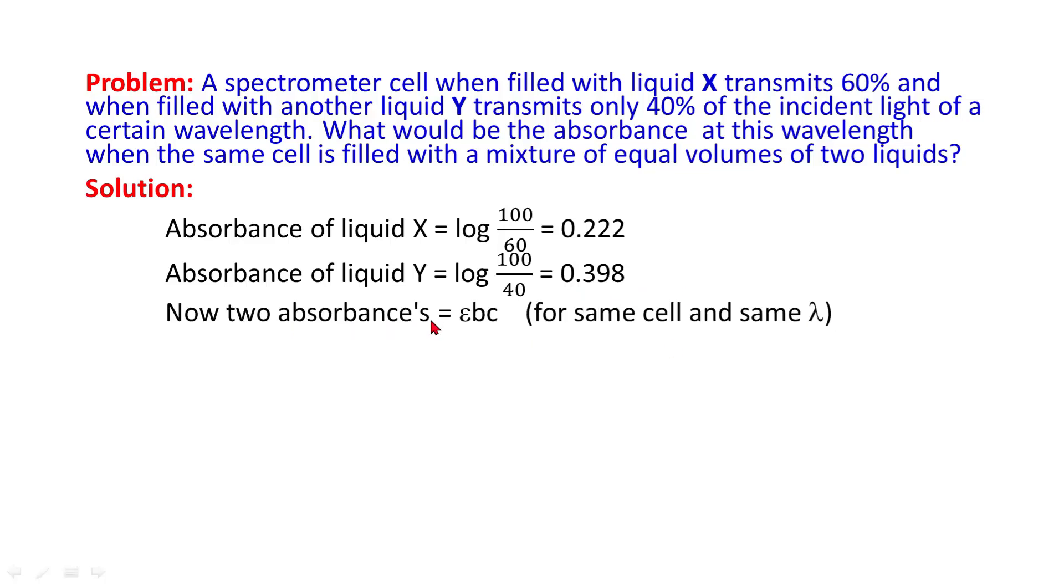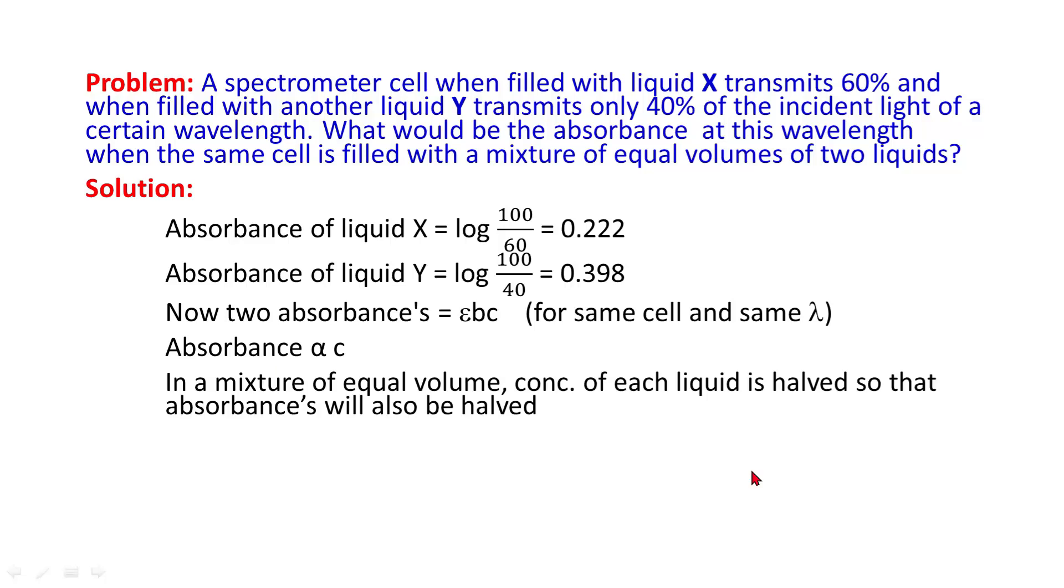Now, two absorbance is equal to εbc. Since absorbance is directly proportional to concentration, in a mixture of equal volume, concentration of each liquid is halved so that absorbances will also be halved. Thus, in a mixture of equal volume of liquid X and Y, absorbance will come out to be 0.310.